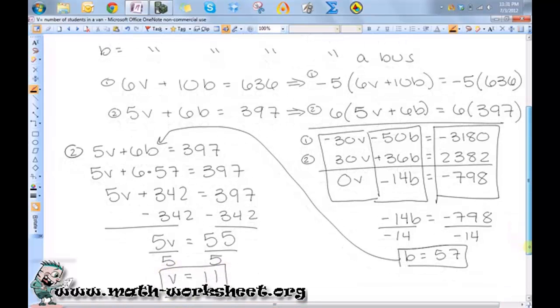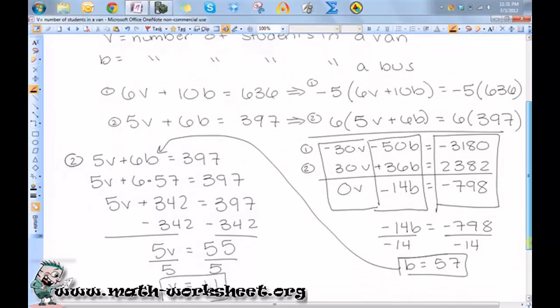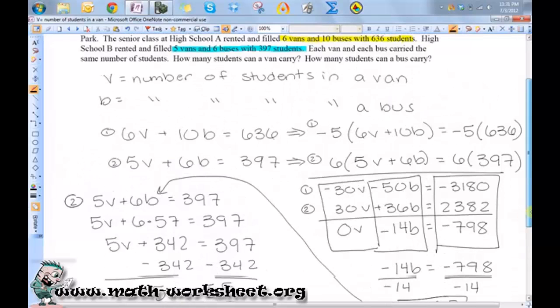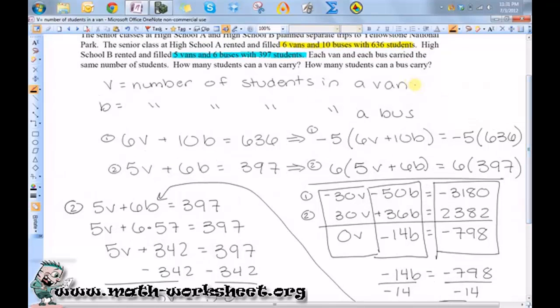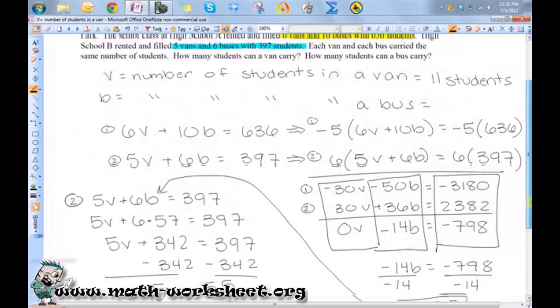So remember what this represented. v represented the number of students in a van, and b represented the number of students in a bus. So v would be 11 students, and b would be 57 students.